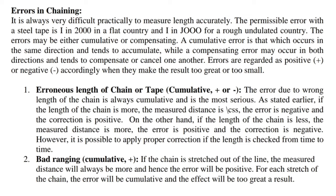If the length of the chain is more, the measured distance is less — the error is negative and the correction is positive. On the other hand, if the length of the chain is less, the measured distance is more — the error is positive and the correction is negative. It is possible to apply proper correction if the length is checked from time to time.